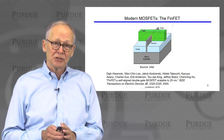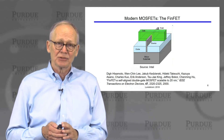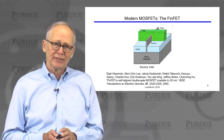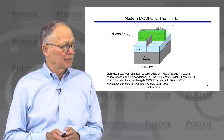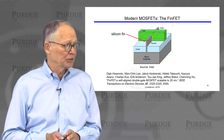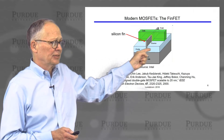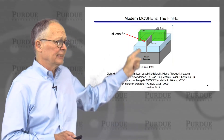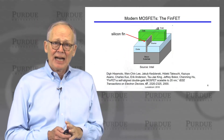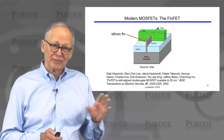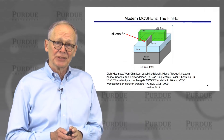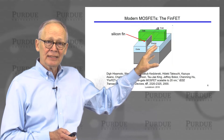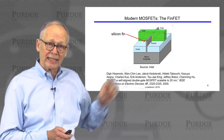Modern transistors have sophisticated structures that look somewhat different. This is a cartoon of a device called the FinFET, which is what the most modern technologies now use. In this case, the transistor itself is built in a thin fin of silicon that sticks up vertically, and the gate wraps around. The operating principles of this device are very similar to the classic device we showed earlier, and we'll talk about why people have gone to this particular structure later in the course.